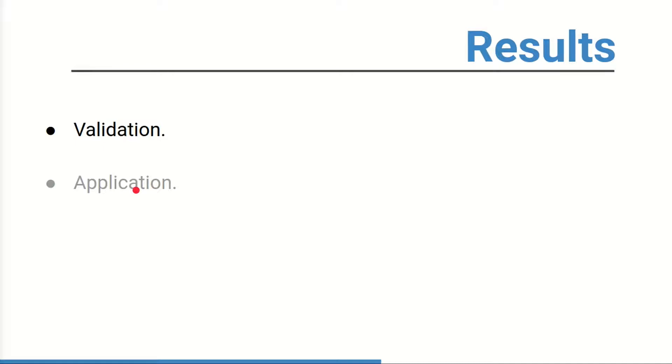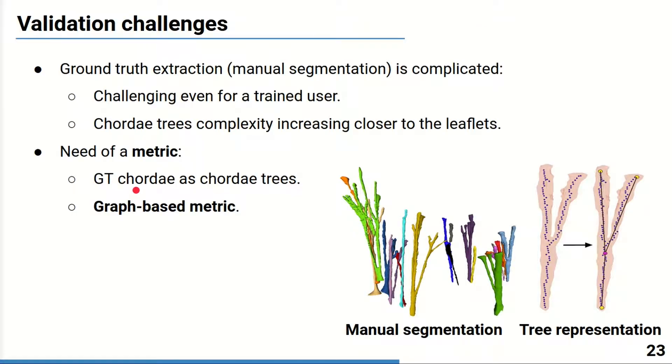Moving on to the validation procedure. We prepared a ground truth ourselves by manual segmentation, which was a cumbersome task even for a skilled user. To compare the results, we decided to represent manually segmented chordae in the form of trees and to assess the quality of the segmentation based on the graph similarity between the ground truth and automatically extracted trees.